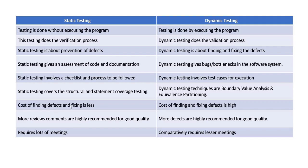The cost of finding defects and fixing them is less in static testing — in the early stage itself we find the defects, so the cost before development is cheaper. The cost of finding and fixing defects is high in dynamic testing. More reviews and comments are highly recommended for good quality in static testing, while more defects being found is highly recommended for good quality in dynamic testing.